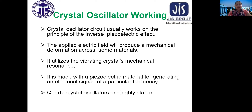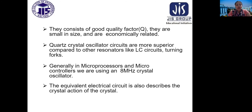Why are crystal oscillators made of quartz crystal? Because quartz crystal oscillators are highly stable, they have a good quality factor, they are small in size, and they are economical. Quartz crystal oscillator circuits are more superior compared to other resonators like LC circuits. Generally in microprocessors and microcontrollers, an 8 MHz crystal oscillator is used. The equivalent electrical circuit also describes the crystal action of the crystal.